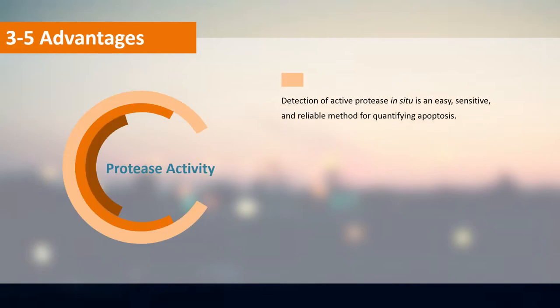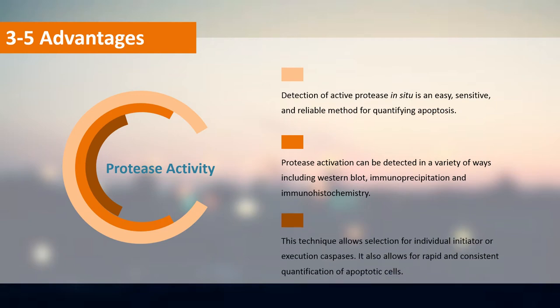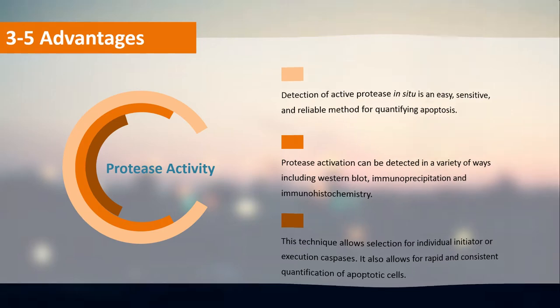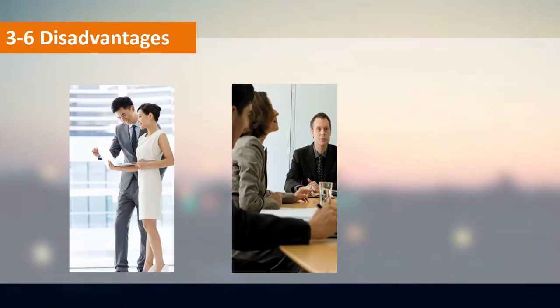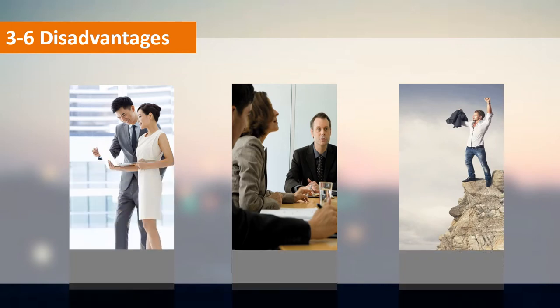Detection of active protease in situ is an easy, sensitive, and reliable method for quantifying apoptosis. Protease activation can be detected in a variety of ways including western blot, immunoprecipitation, and immunohistochemistry. This technique allows selection for individual initiator or executioner caspases and rapid, consistent quantification of apoptotic cells. However, the integrity of the sample is destroyed, eliminating the possibility of localizing the apoptotic event within the tissue or determining the type of cell undergoing apoptosis. Additionally, caspase activation does not necessarily indicate that apoptosis will occur, and there is tremendous overlap in substrate preferences among caspase family members, affecting assay specificity.